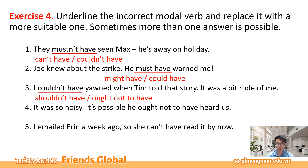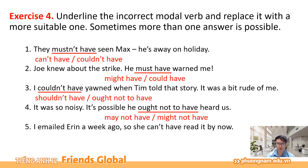Number 4: It was so noisy. It's possible he ought not to have heard us. Động từ khiếm khuyết là ought not to have — ở đây cũng có một dấu hiệu nhận biết: cụm 'It's possible' thường dùng để đưa ra một sự dự đoán không chắc chắn về khả năng điều gì đó có thể xảy ra. Để nói về khả năng điều gì đó có thể xảy ra trong quá khứ chúng ta có thể dùng may not have hoặc là might not have — nó có thể là anh ấy đã không nghe thấy chúng tôi.